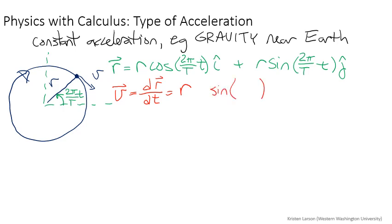Sine of something times i-hat plus r times something times cosine of that thing times j-hat. The derivative of cosine is a minus sign so we'll put a minus sign out front. The derivative of sine is a positive cosine, which is what we have here.